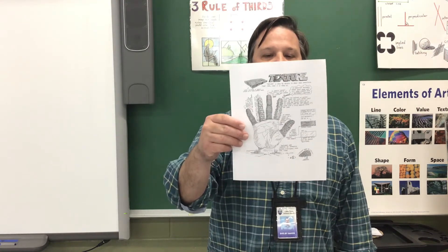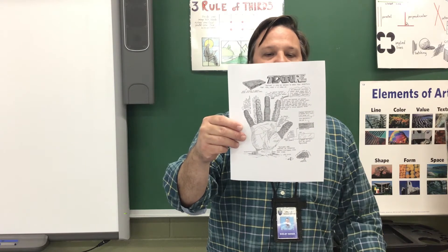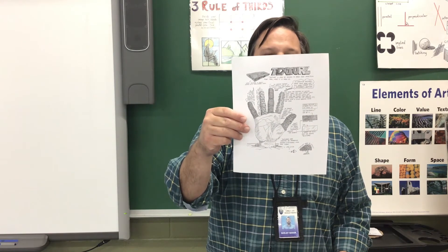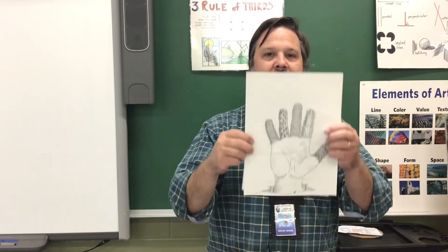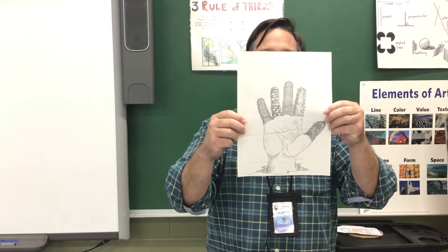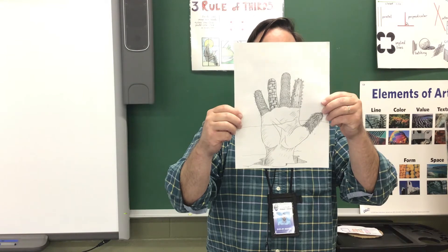Today, when we're working, we're going to be thinking about texture. Remember that texture is the way that objects look like they feel or feel when we touch them. And in our folder, I've included this texture handout. This is going to show you some really good ways to create texture for five fingers of a hand. And in the demonstration, I'm going to go through all of the steps with you tracing the hand and drawing each of these textures from the handout.